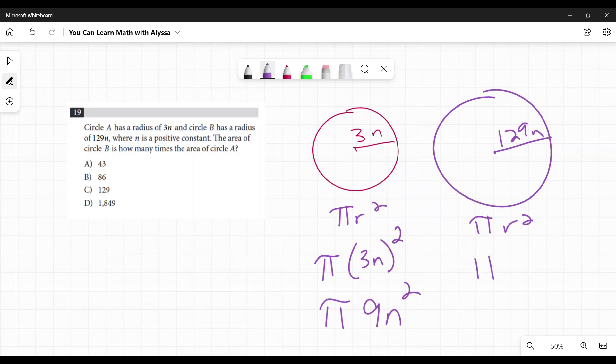Same thing over here. We have pi times our radius, 129n squared. So what's 129 times 129? 16,641 n squared times pi.